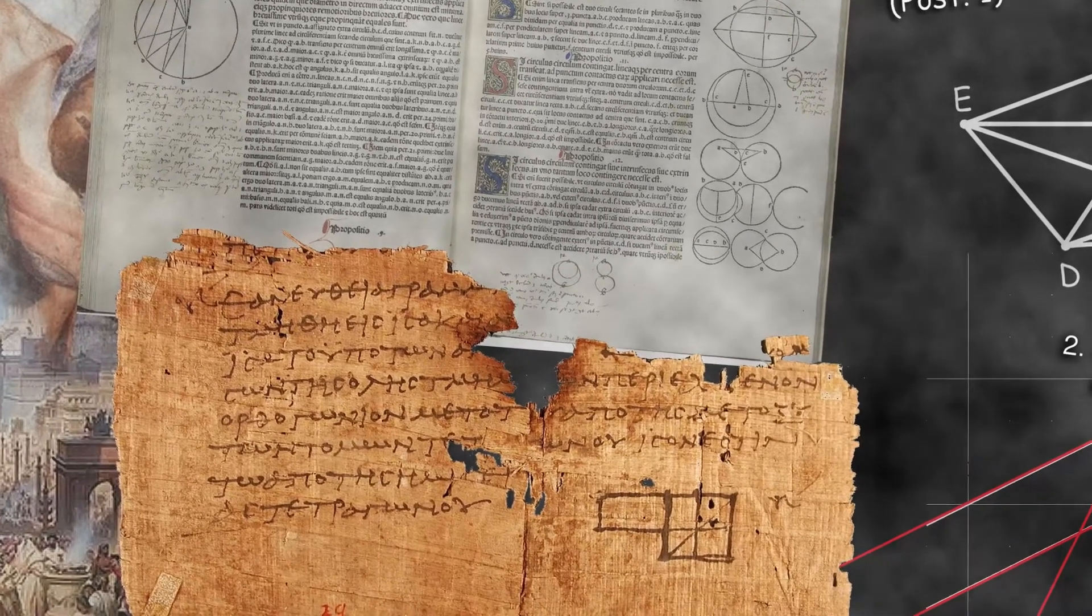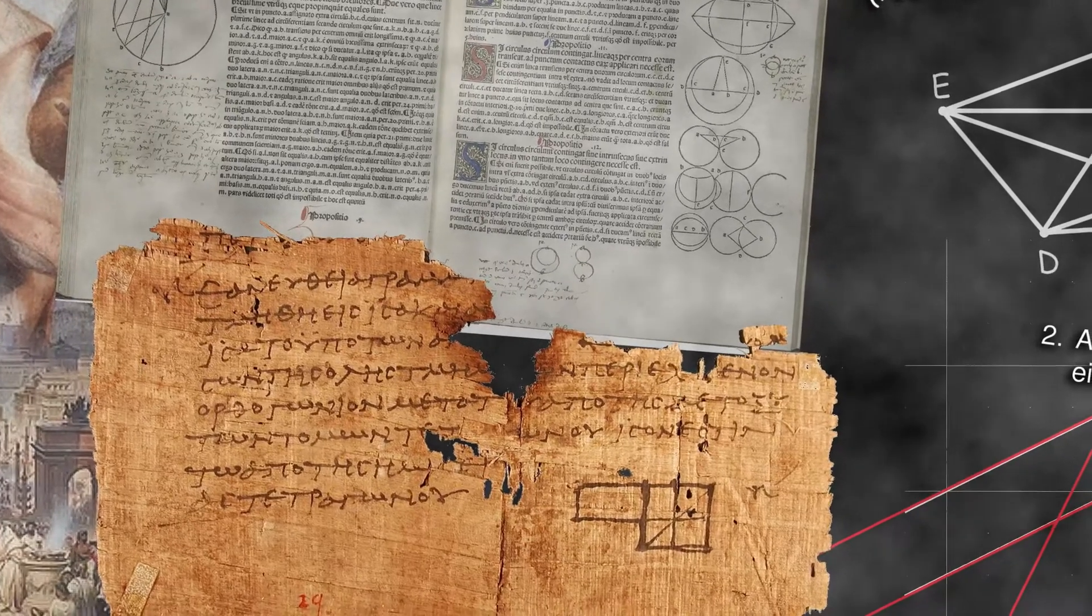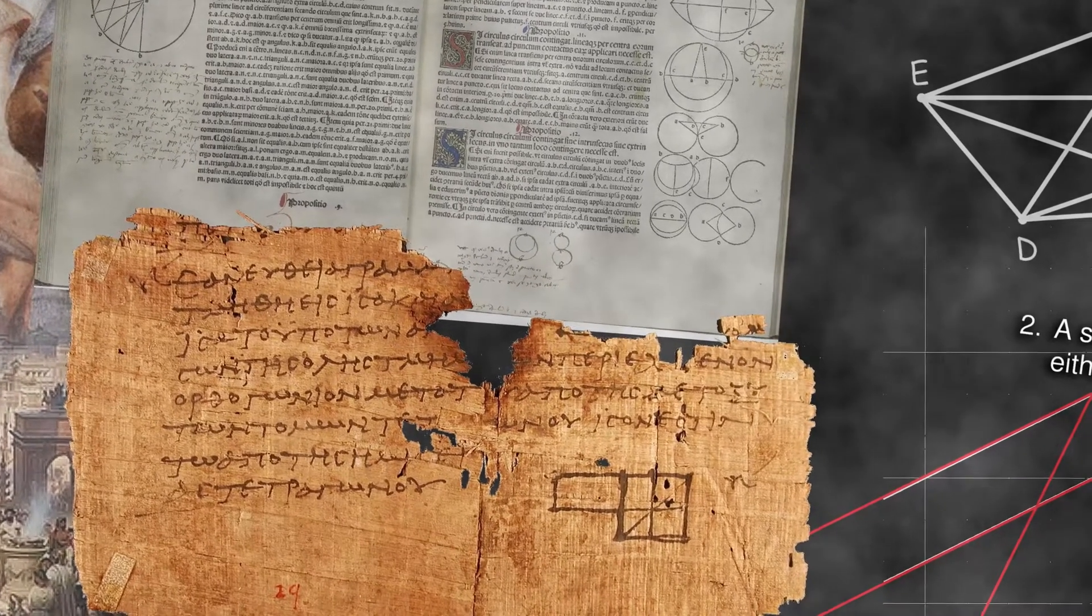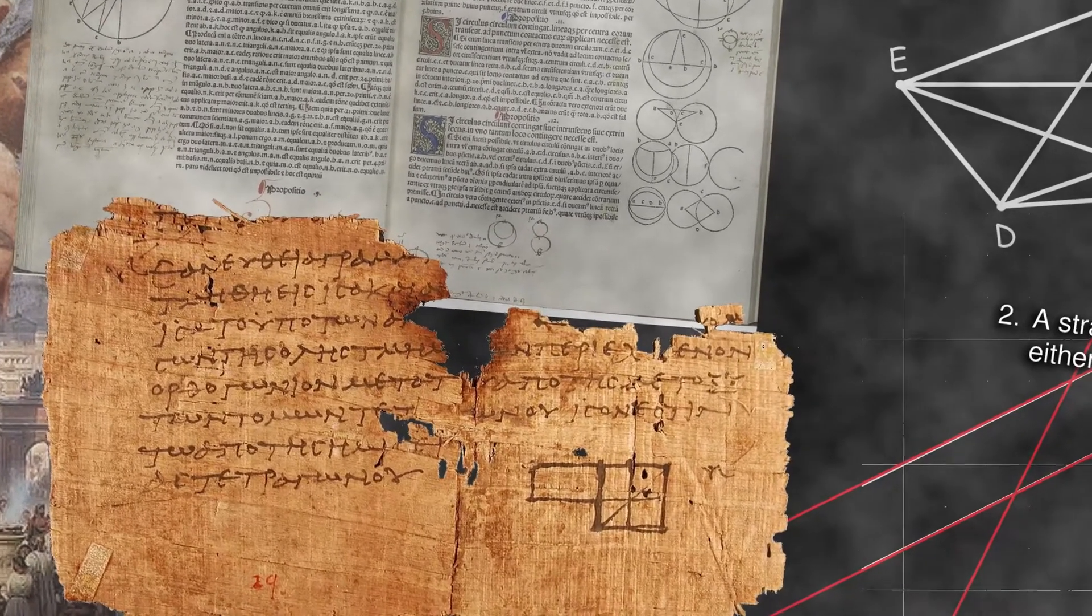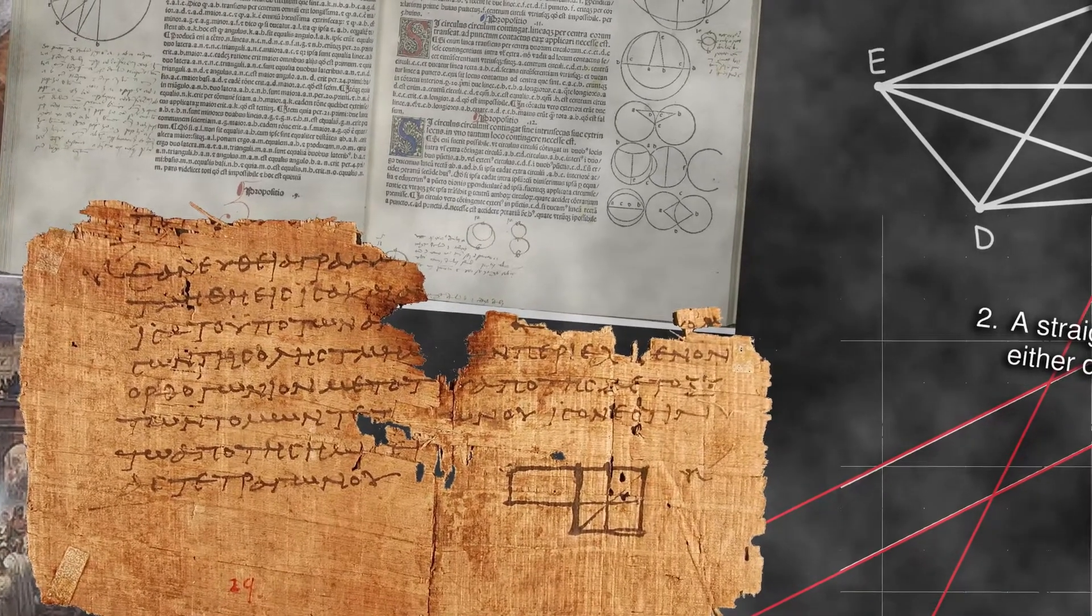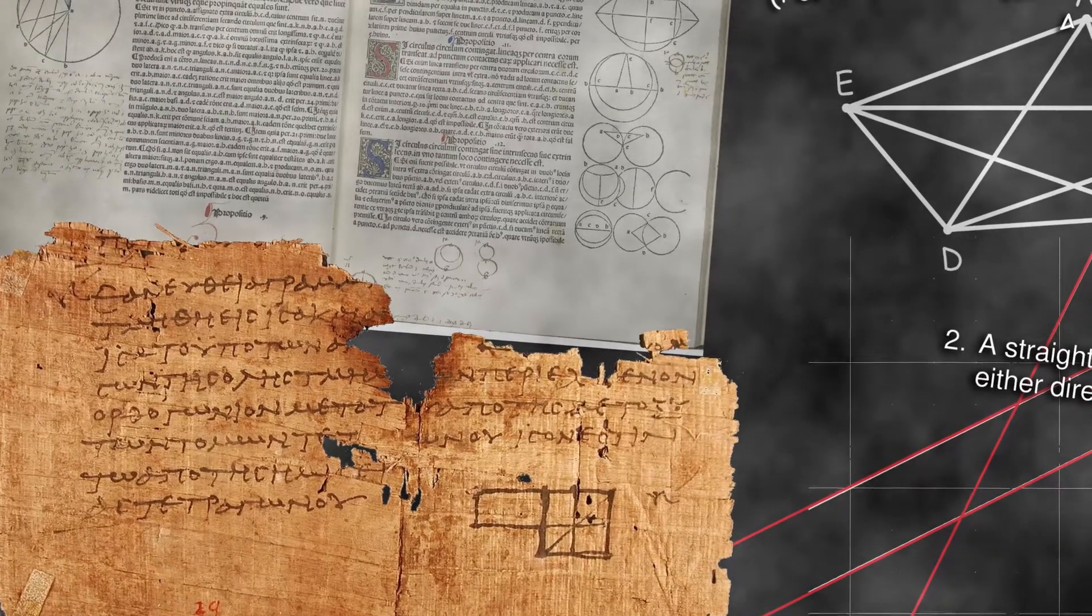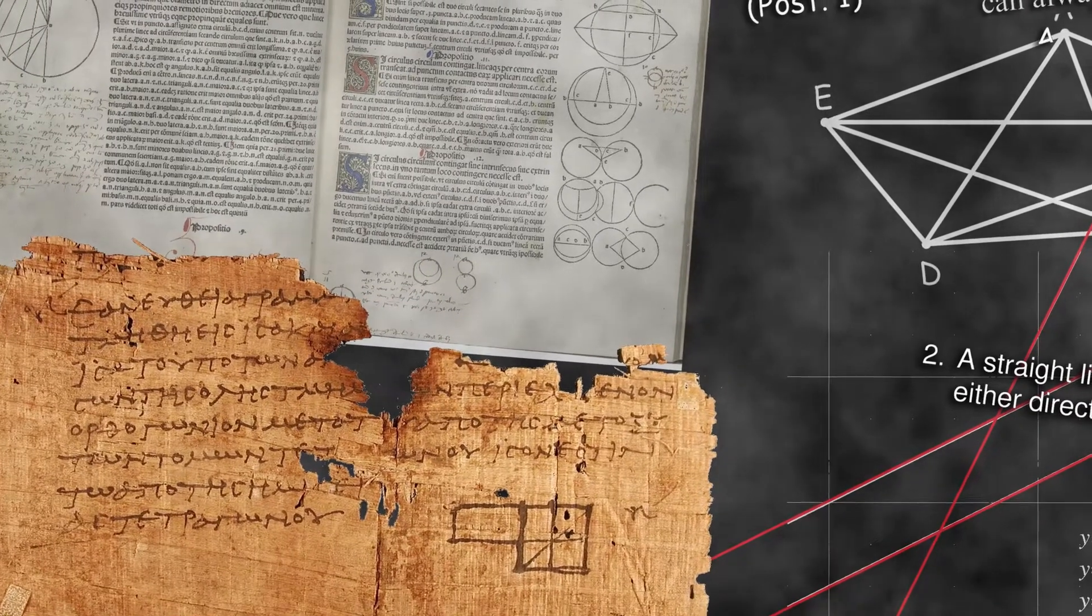Elements is basically about geometry, the study of shape. It contains all the basic rules to do with triangles, squares, rectangles, and other shapes that children are taught in school today. But the book did more.